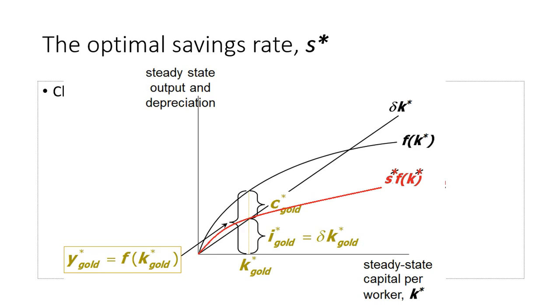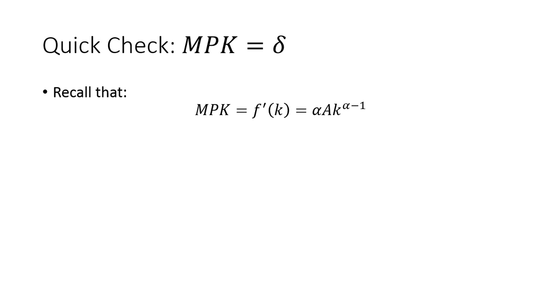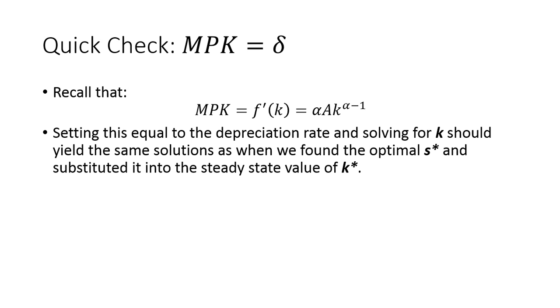You should recognize that we could have just looked at the production function and the investment function and looked at the value of k that gives the biggest distance. And it turns out the value that gives us the biggest distance between f and depreciation happens to occur at the point where those two functions have the exact same slope. Recall the slope of the production function is just the marginal product of capital. So hypothetically, we could just take the marginal product of capital and set this equal to the depreciation rate and solve for k, and that should give us the exact same value of k in the optimal steady-state we found that corresponded to that golden rule savings rate.